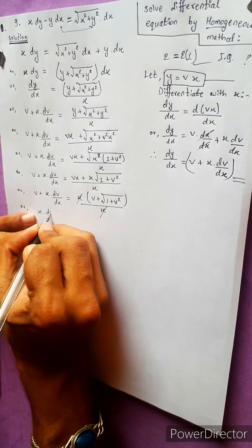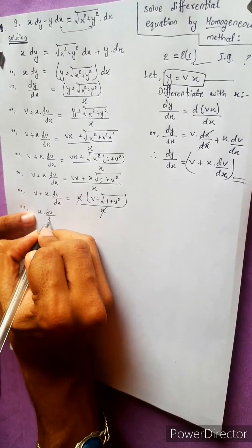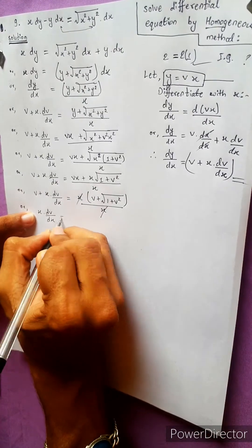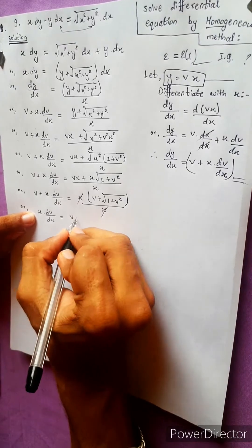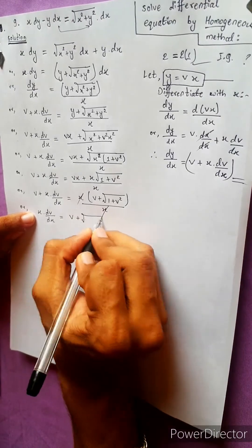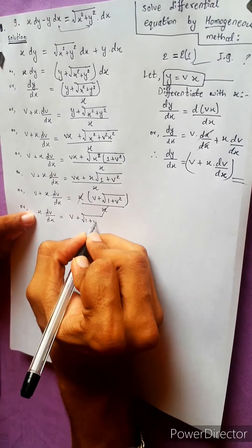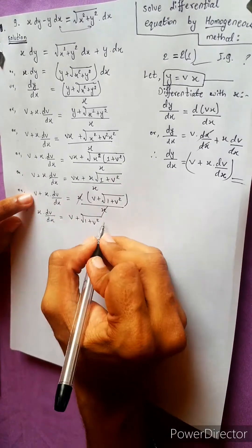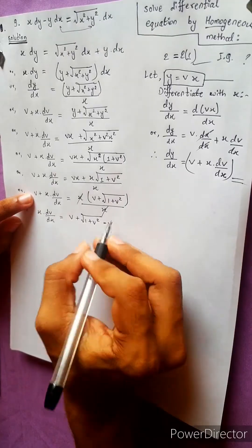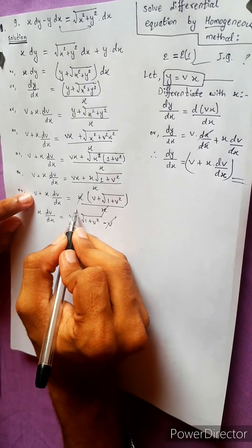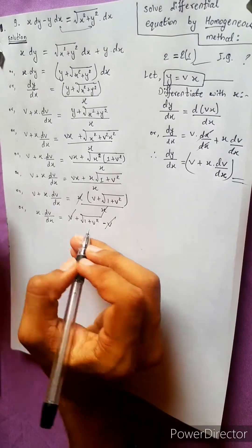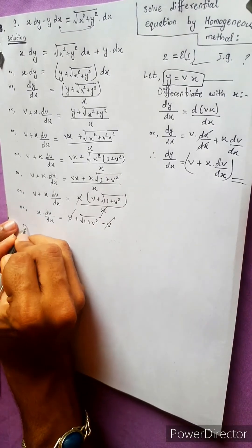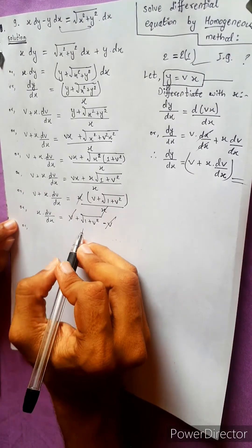x into dv by dx is equal to b plus under root of 1 plus b squared. Then minus b, minus b — plus b cancel.